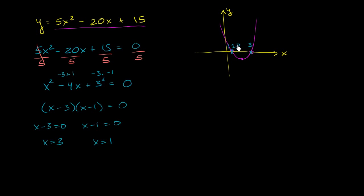So this is the point 1 comma 0. This is the point 3 comma 0. And so the last one I want to figure out is this point right over here, the vertex.